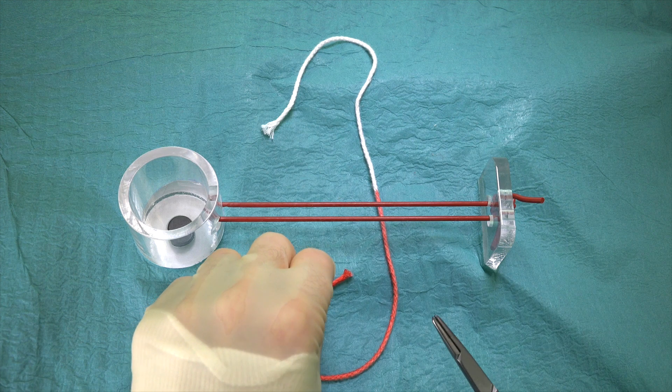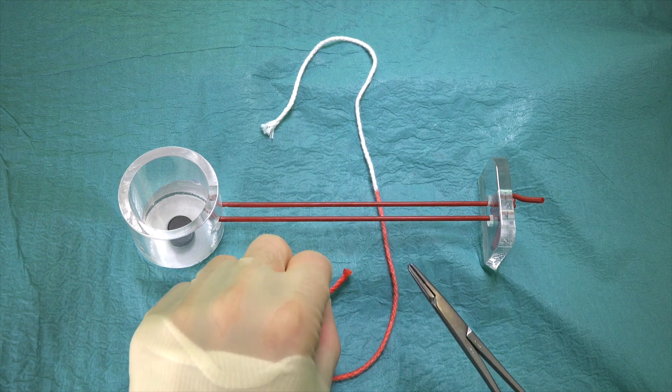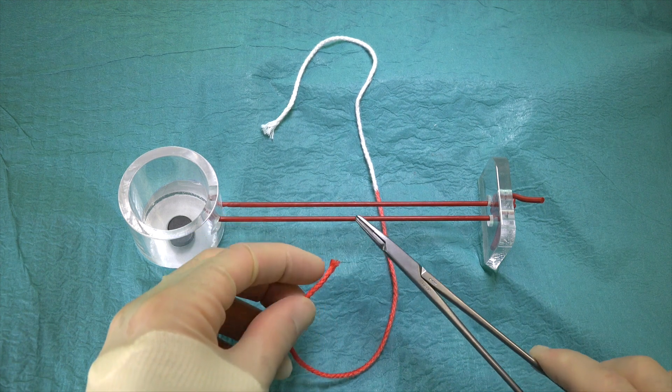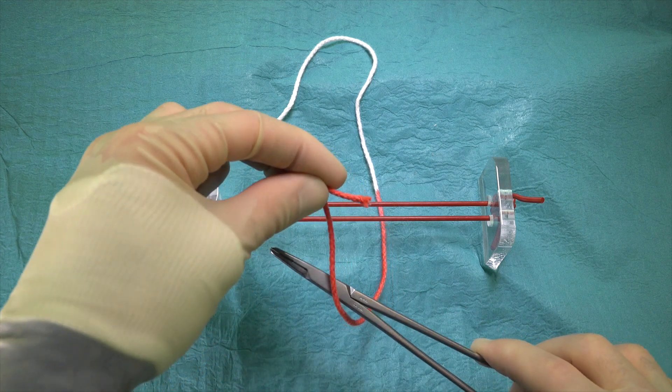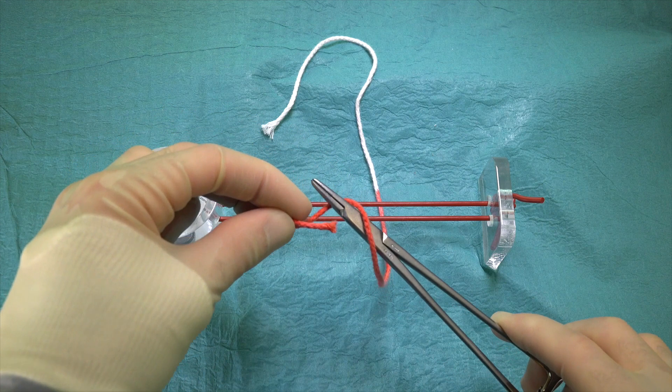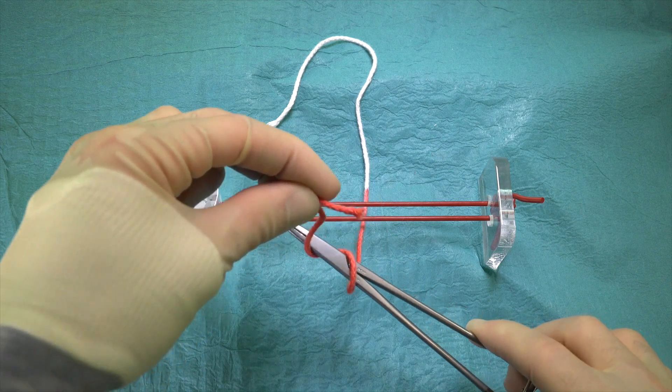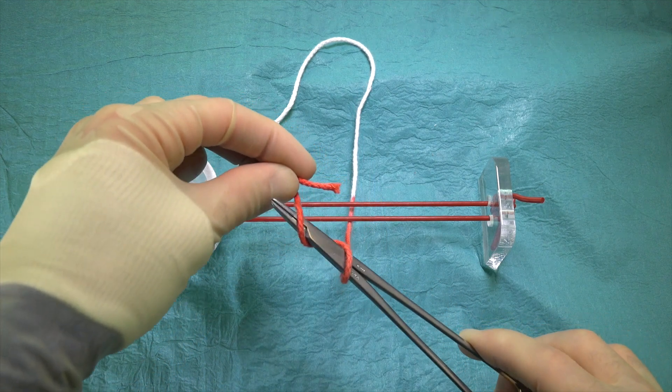We start by holding the end of the suture closest to us in our left hand. The needle holder in our right hand is held out horizontally over the suture. The left hand then loops the suture up and over the instrument, on this occasion twice as opposed to once as we would for a normal Reef Knot.